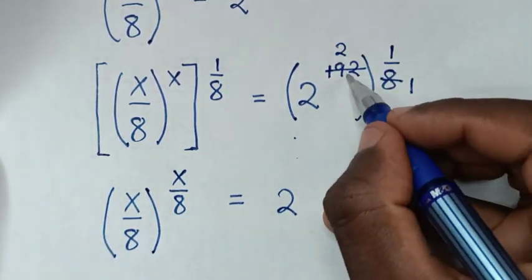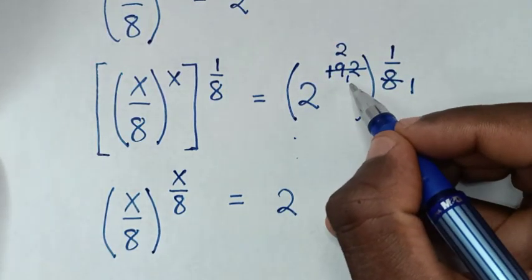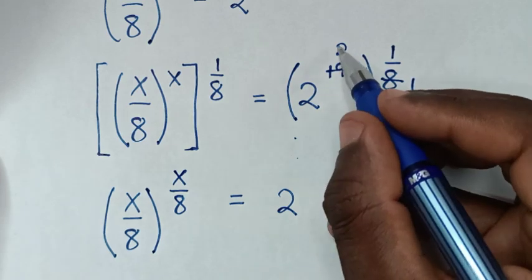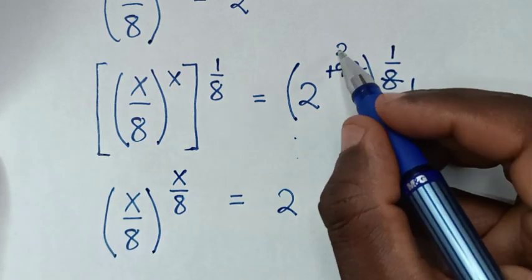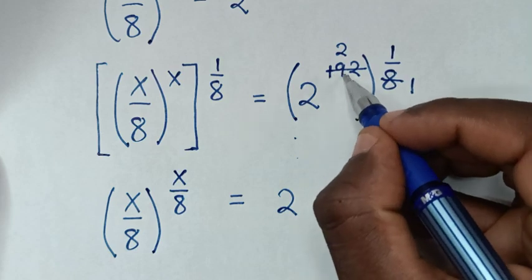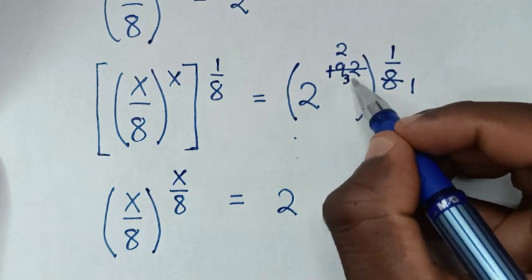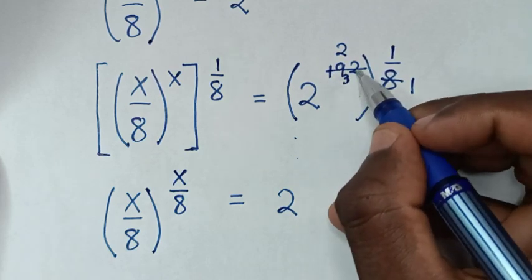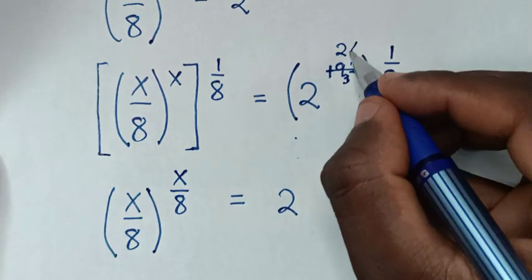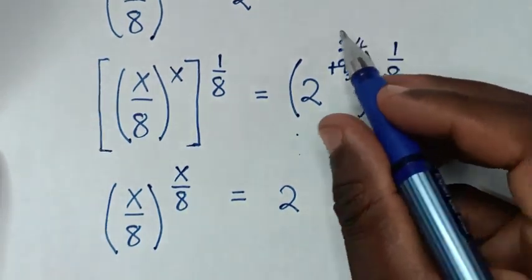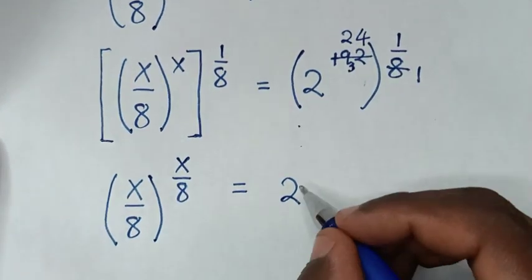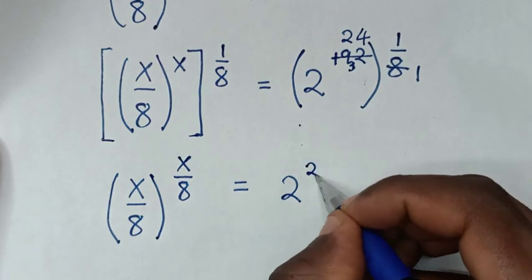192 divided by 8 is 24. So 32 divided by 8 is 4, giving 24 times 1, so it will be power of 24.